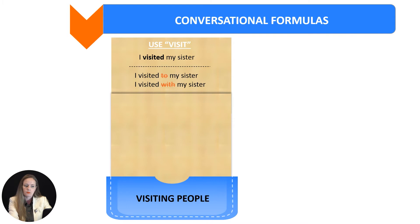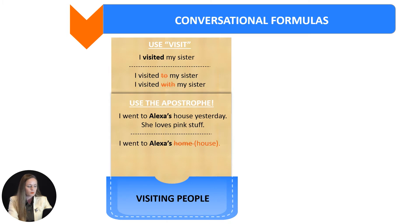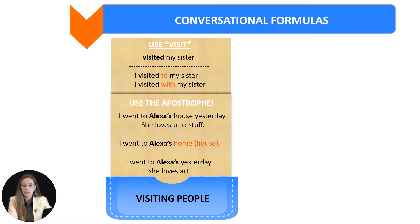When we want to be less formal, more natural and relaxed, we use the apostrophe. There are two ways. The first way is quite simple: I went to Alexa's house yesterday — she loves pink stuff. Remember, don't use Alexa's home. We can shorten this to I went to Alexa's, even if Alexa lives in a flat, a lighthouse, a cave or on a boat. We can also remove the word house entirely: I went to Alexa's yesterday — she loves art.